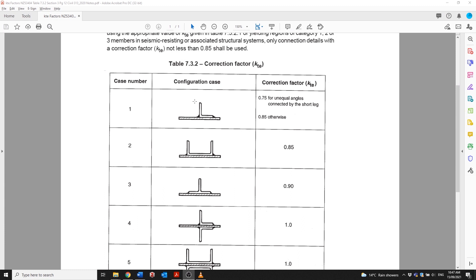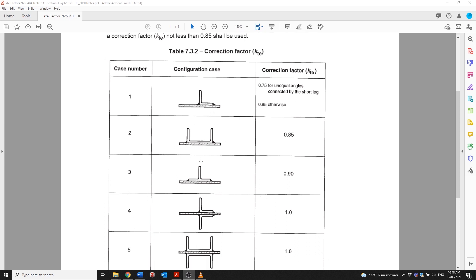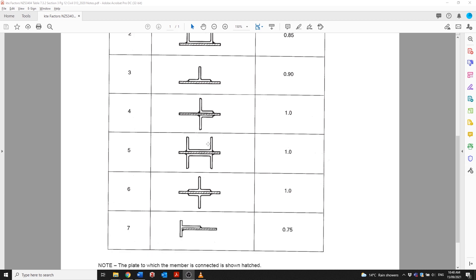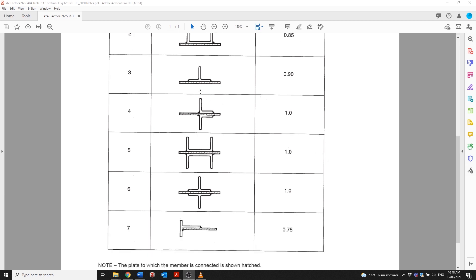What it has is a series of different sort of connection cases and then what the appropriate kte factor is there. So you've got an angle connected either with equal length legs or unequal legs, you have a channel connected to a plate, a T section. What you'll notice with these cases as we go further down, if we have a symmetric section the kte factor equals one.